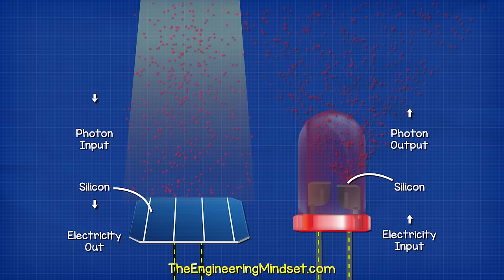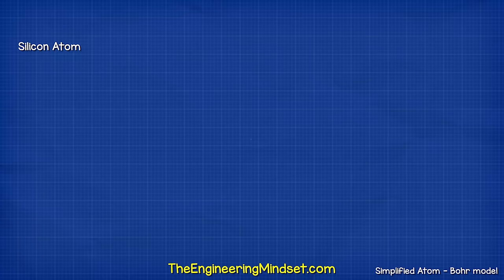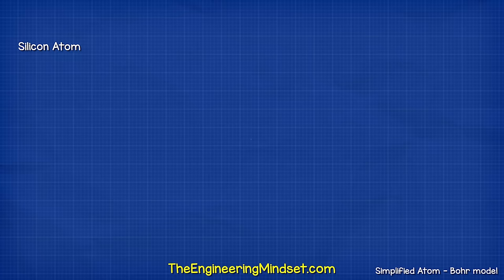LEDs also use silicon and so do diodes. A solar cell is basically just a giant flat LED working in reverse. We can actually shine light into an LED and it will produce a voltage. Check out our LED video to learn how they work in detail.